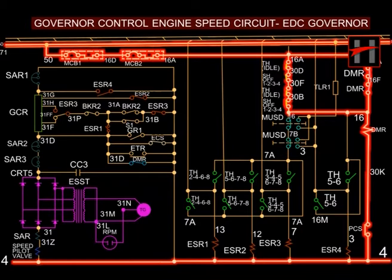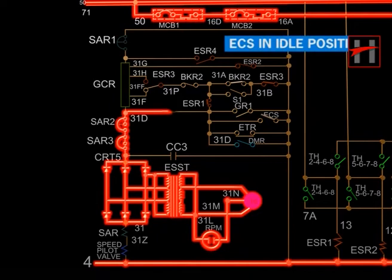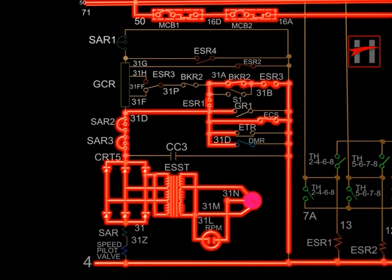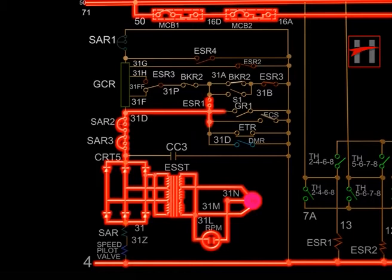The rectified output of the tacho generator flows through CRT-5, SAR-3, SAR-2, cable number 31D, interlocks of ESR-3, interlocks of ESR-1 and ECS, ESR-3, and completes its path with cable number 4, speed coil of pilot valve, cable number 31Z, SAR coil, and cable number 31.